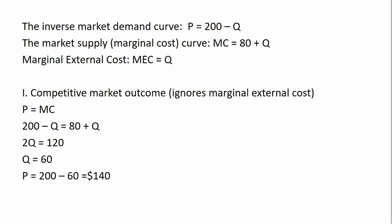This market outcome will be inefficient. The inefficiency results from producing too much product, namely producing some units of output in which the true social cost exceeds the benefit of those units.